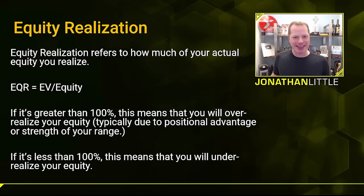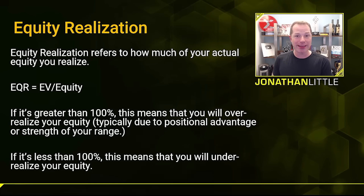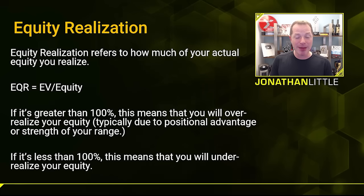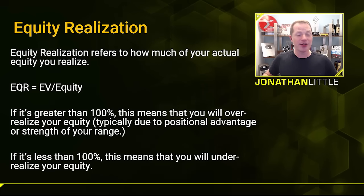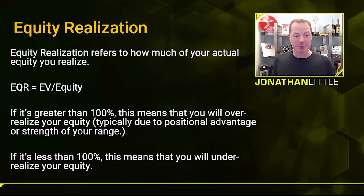Now let's discuss equity realization. This refers to how much of your equity you actually get out of the pot. Suppose you raise with ace-king and the player in the big blind calls with pocket twos. If the flop comes queen, 10, 7, and they check and you make a continuation bet, even though you have the worst hand with ace-king, you're going to get those pocket twos to fold. And if they do decide to call the flop, they're probably going to fold if you keep betting on the turn and/or river. So in this scenario, because your opponent is out of position, they're going to have a very difficult time fully realizing their equity.